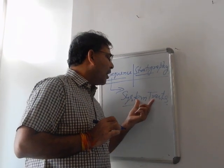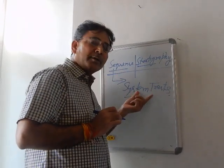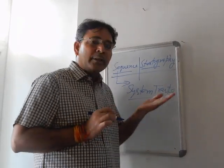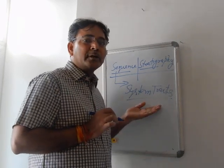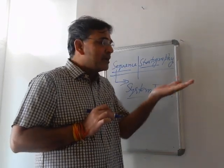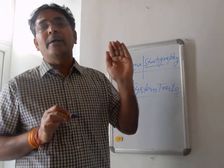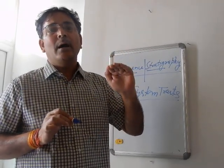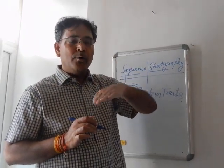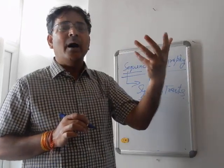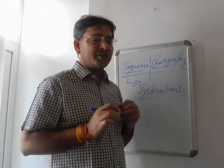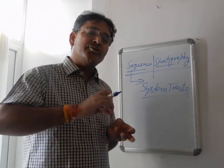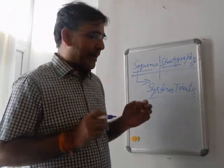System tracts are those sequences which were deposited when the sea level was low, when the sea level was falling, when the sea level was rising, or when the sea level was high. As per the different stages of sea level, there are four types of system tracts: falling stage system tract, lowstand system tract, transgressive system tract, and highstand system tract.